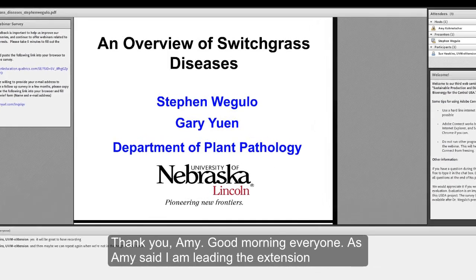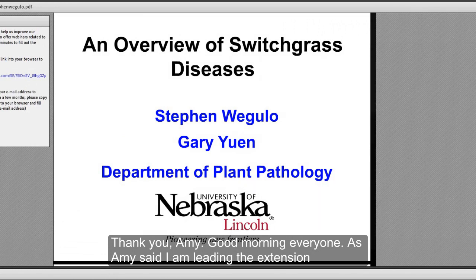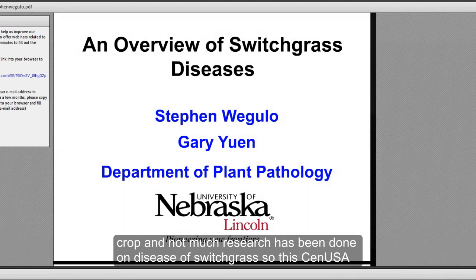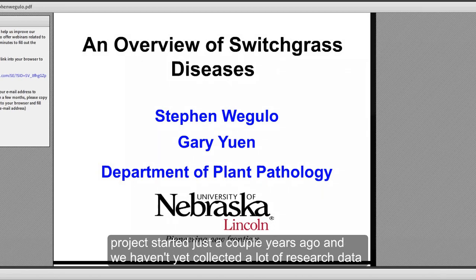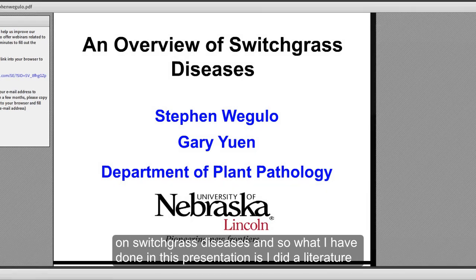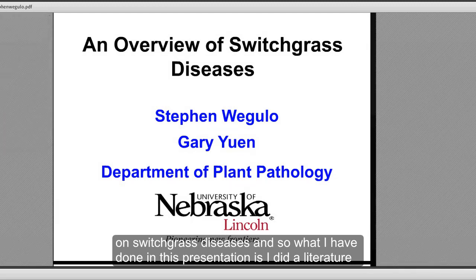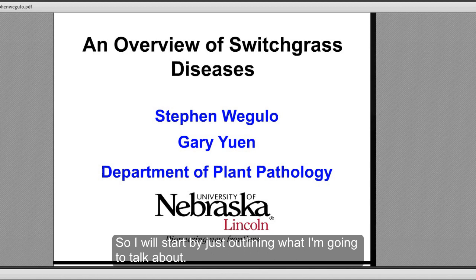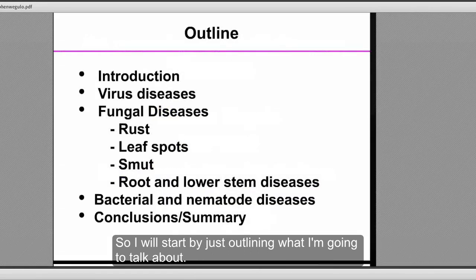Thank you, Amy. Good morning, everyone. I am leading the extension component of the pathology for this project. Switchgrass is a biofuels crop, and not much research has been done on diseases of switchgrass. So this CEN USA project started just a couple of years ago, and we haven't yet collected a lot of research data on switchgrass diseases. What I have done in this presentation is a literature review of what has been done at other institutions, putting together an overview of switchgrass diseases.